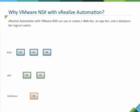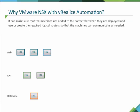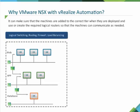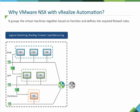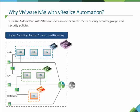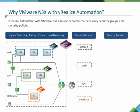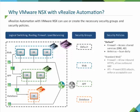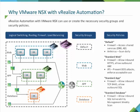vRealize Automation with VMware NSX can use or create a web tier, an app tier, and a database tier logical switch. It can make sure machines are added to the correct tier when deployed, and use or create the required logical routers so machines can communicate as needed. It groups virtual machines together based on function, defines and applies the required firewall rules, and can use or create the necessary security groups and security policies, such as the default, web, app, and database security groups.